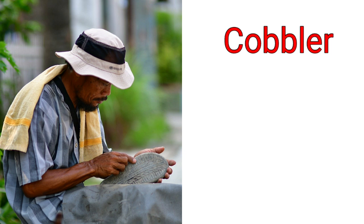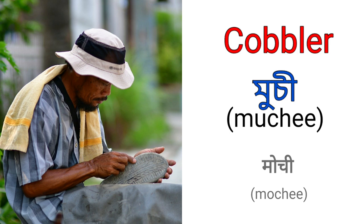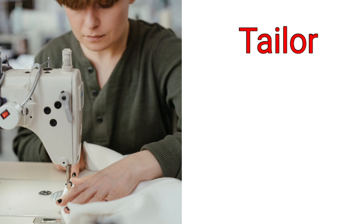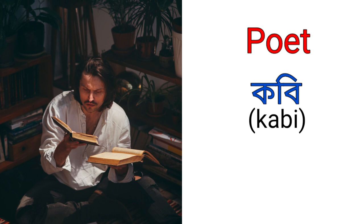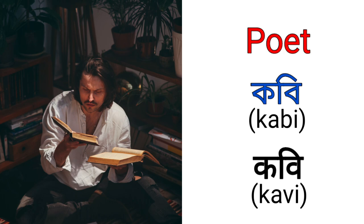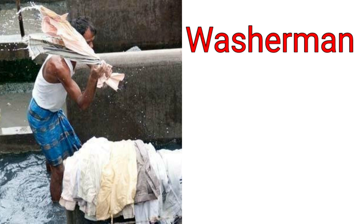Cobbler is called Musi in Assamese and Mosi in Hindi. Taylor is called Dorji in Assamese and Darji in Hindi. Poet is called Kobi in Assamese and Kabhi in Hindi. Washerman is called Dhova in Assamese and Dhova in Hindi.